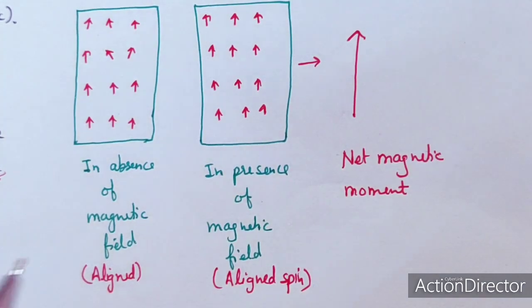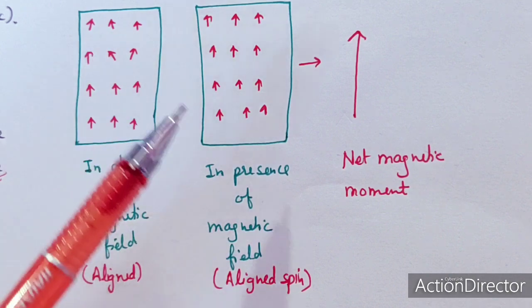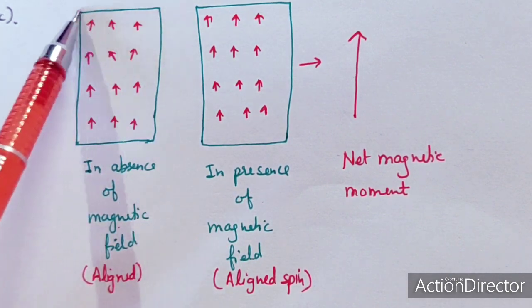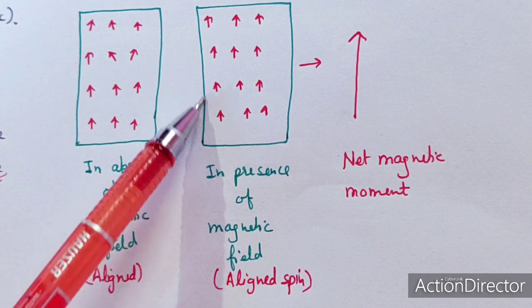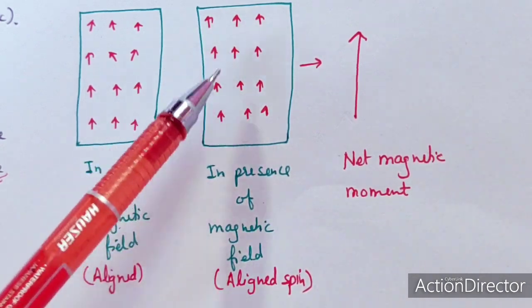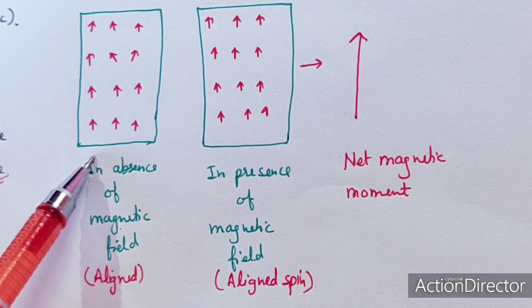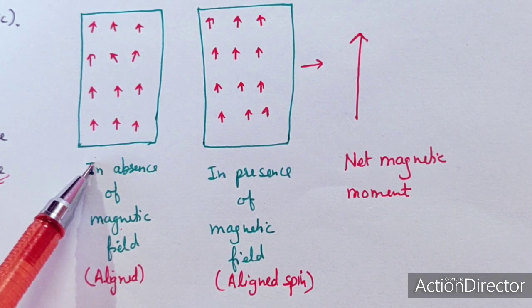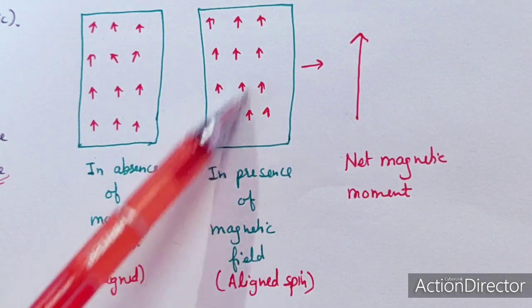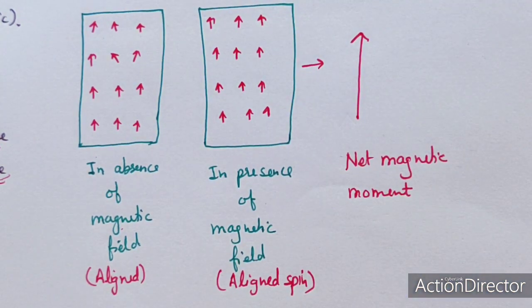In absence of a magnetic field the spins are somewhat aligned within each domain, and in presence of the magnetic field the spins align perfectly. These ferromagnetic substances have some magnetic moment even in the absence of a magnetic field, but in the presence of the field the net magnetic moment is maximized.